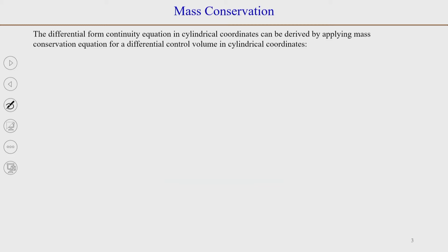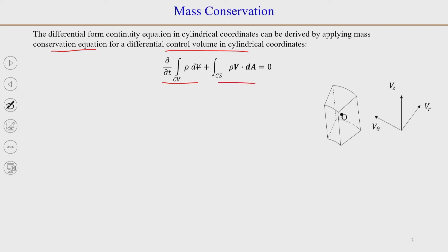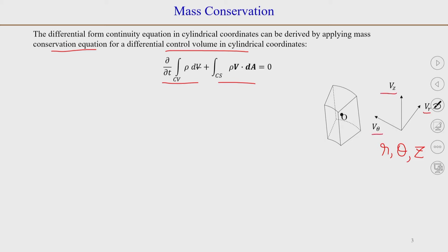This can be derived by applying the mass conservation equation to a differential control volume in cylindrical coordinates, just as we did in Cartesian coordinates. In cylindrical coordinates, there are 3 directions: r, theta, and z, and the velocity components are v_r, v_theta, and v_z.